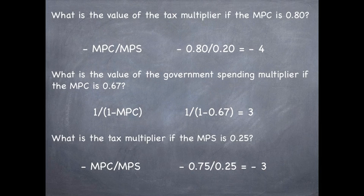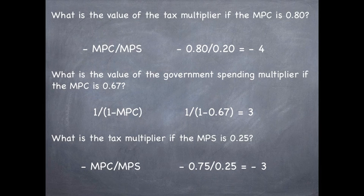What is the value of the tax multiplier if the MPC is 0.80? We take negative MPC divided by MPS. We know that consumption is 80%, so that means savings is 20%. So we take negative 0.80 divided by 0.20, which equals negative 4.